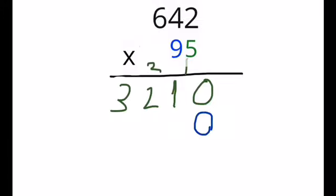9 times 2 is 18, put down your 8, carry your 1. 9 times 4 is 36, plus your 1 is 37, put down your 7, carry your 3.